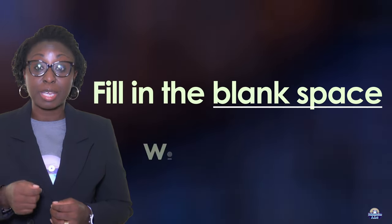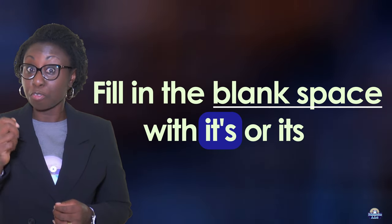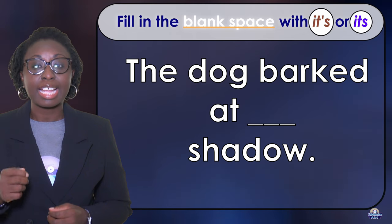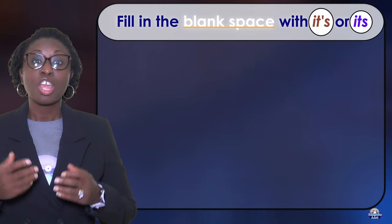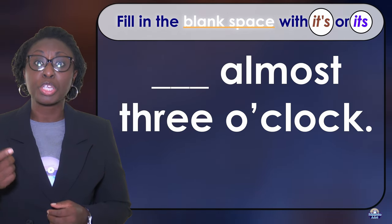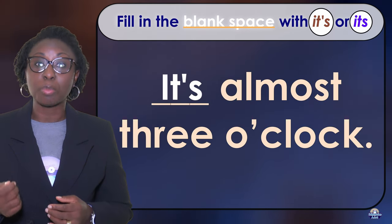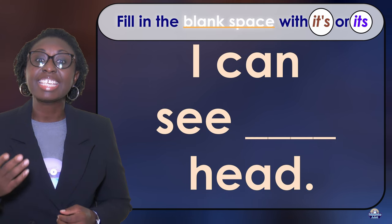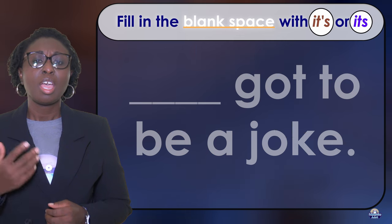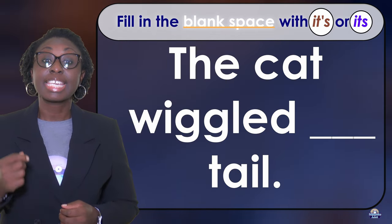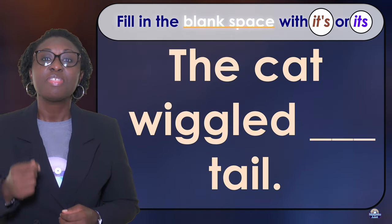Now let's practice. Fill in the blank with 'it's' or 'its'. The dog barked at blank shadow — the dog barked at its shadow. Blank almost three o'clock — it's almost three o'clock. I can see blank head — I can see its head. Blank got to be a joke — it's got to be a joke.